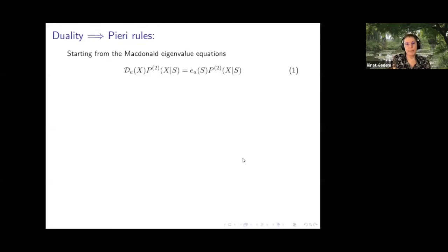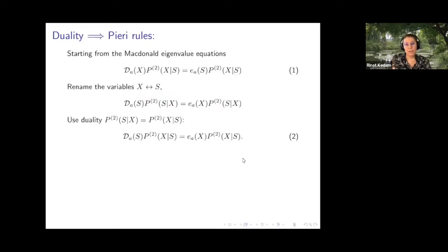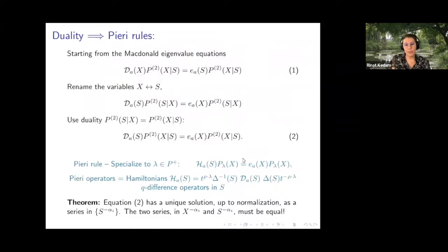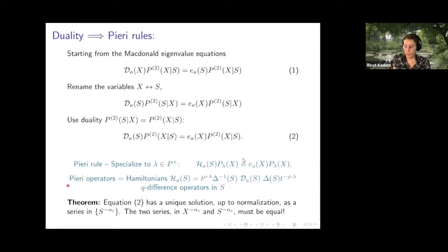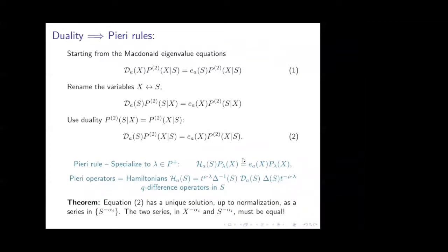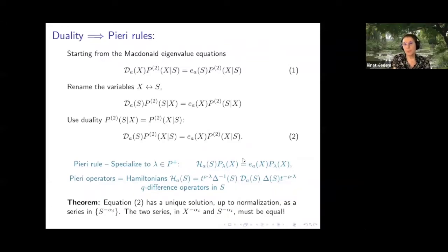From duality to Pieri rules: start with the eigenvalue equation with self-dual normalization, rename the variables x and s, use duality, and you get a Q-difference operator in s acting on P giving E_A(x) acting on P — that's the Pieri rule. The Pieri operators, which I call Hamiltonians, describe what happens to a McDonald polynomial when you multiply by an elementary symmetric function. Here, Pieri refers to multiplication by ordinary elementary symmetric functions, not McDonald's version.